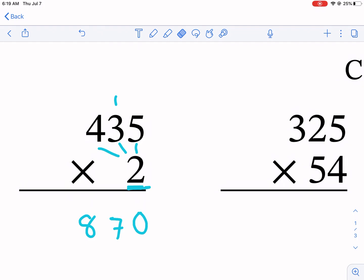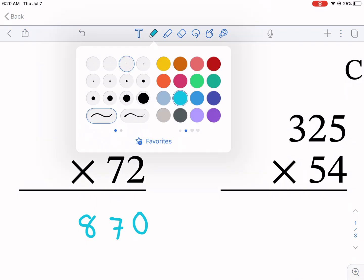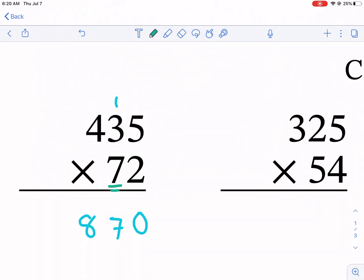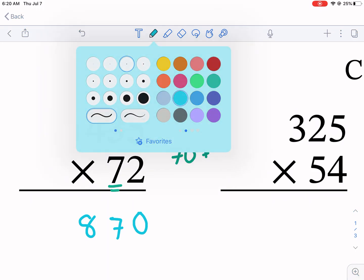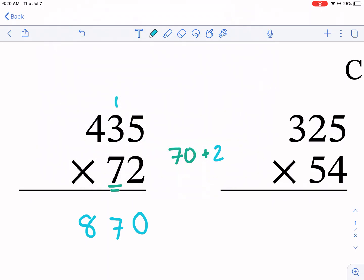But since this is two-digit multiplication, that's not all we're going to do. We're going to have that seven there. I want to keep that one there because you're going to have that on your paper. Now we're going to the tens place. 72 represents 70 plus 2, so 70 plus 2 times 435.